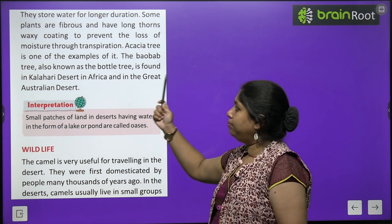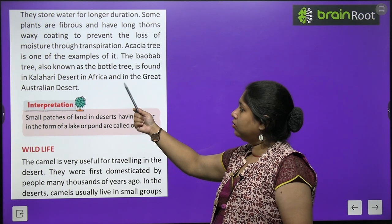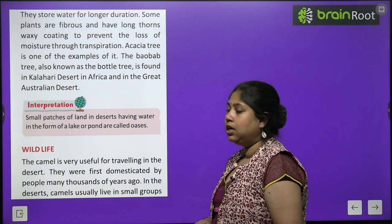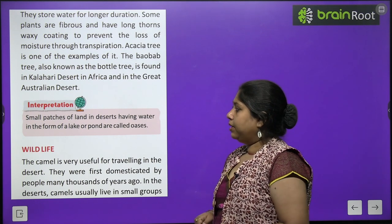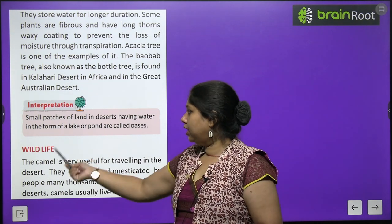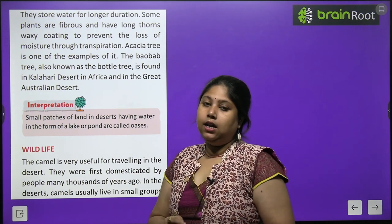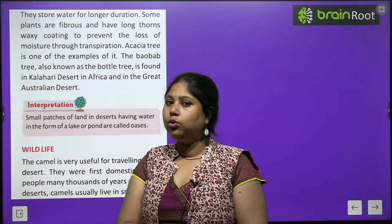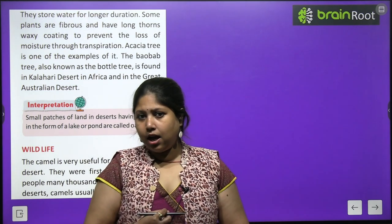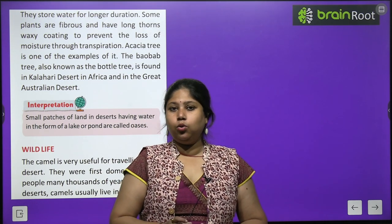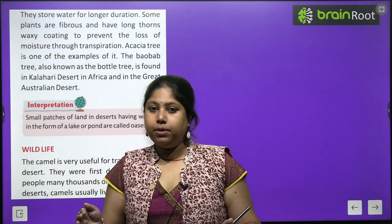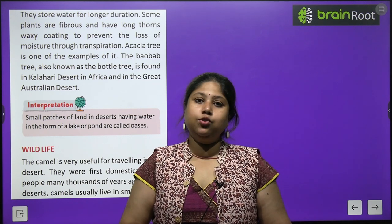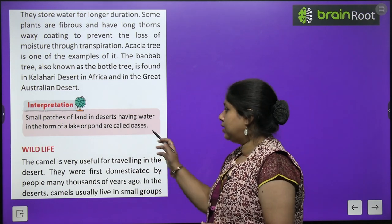Acacia tree is one example of desert vegetation. The Boab tree, also known as the bottle tree, is found in the Kalahari desert in Africa and in the Great Australian desert. Small patches of land in deserts having water in the form of a lake or pond are called oasis — reti mein jo chhoti jagah hara-bhara hoti hai jahan paani milta hai, use hum oasis bolte hain.